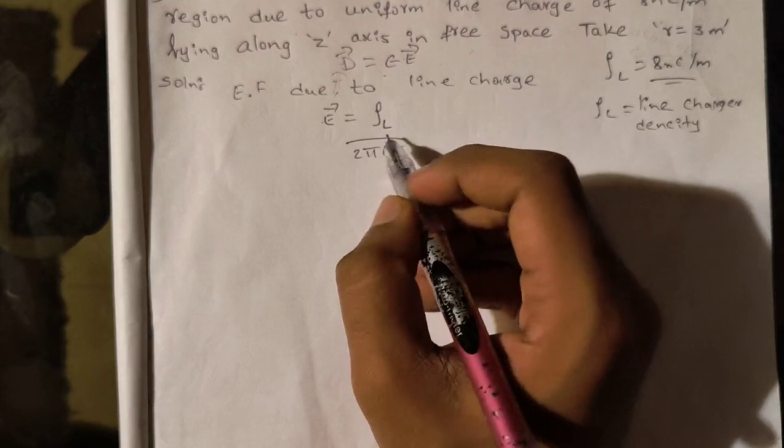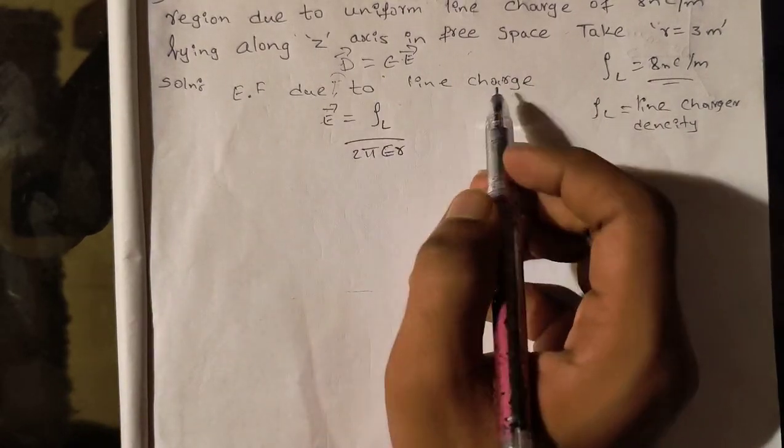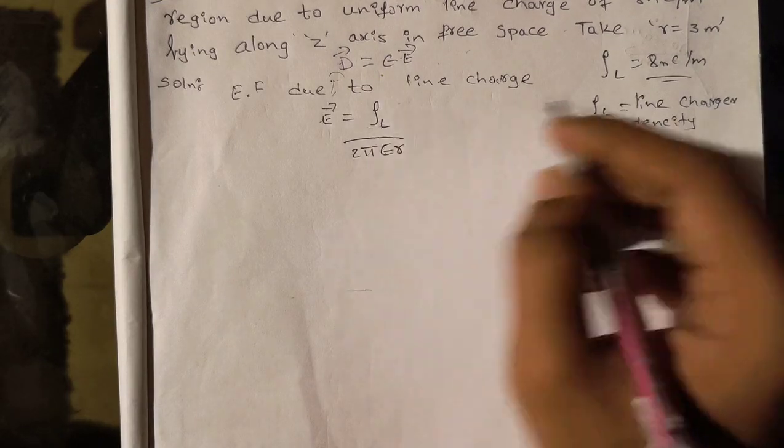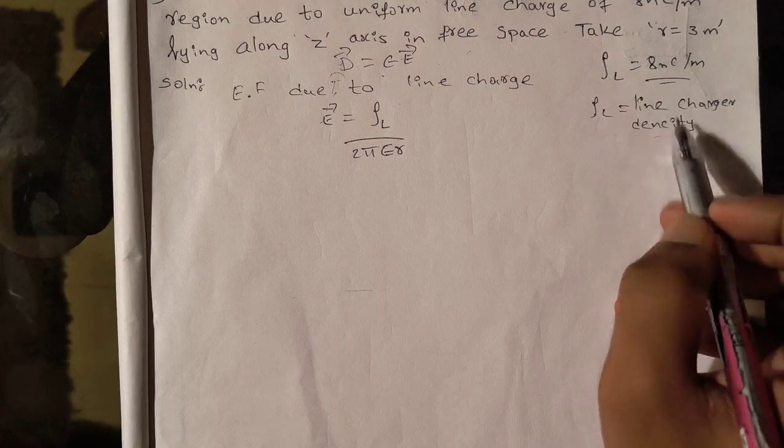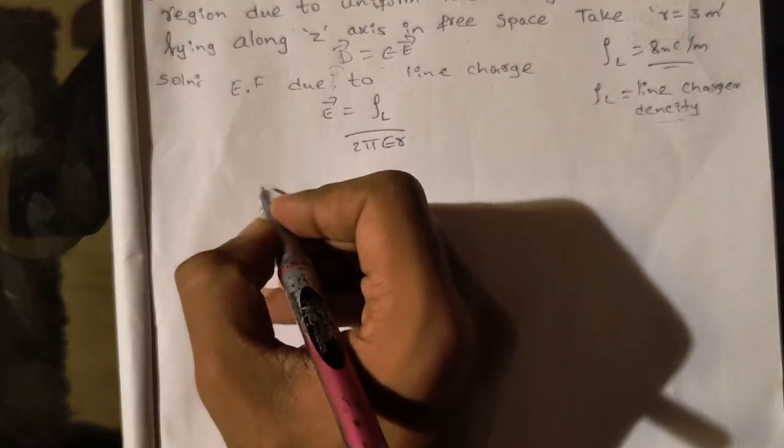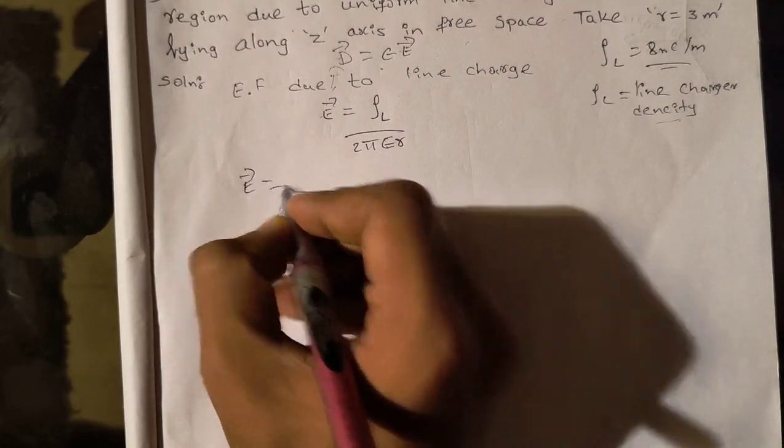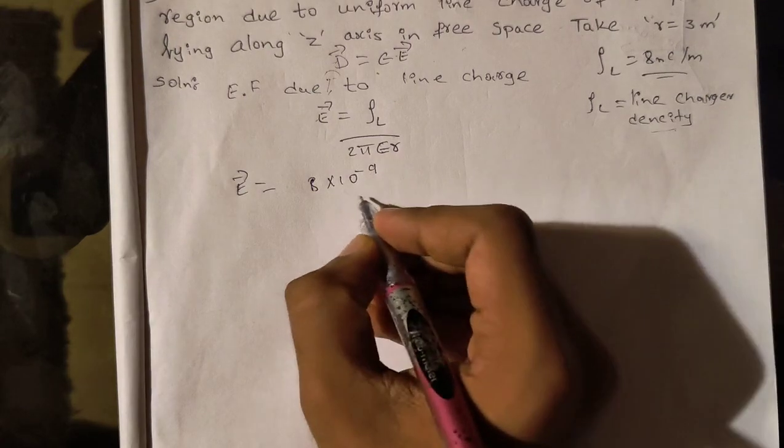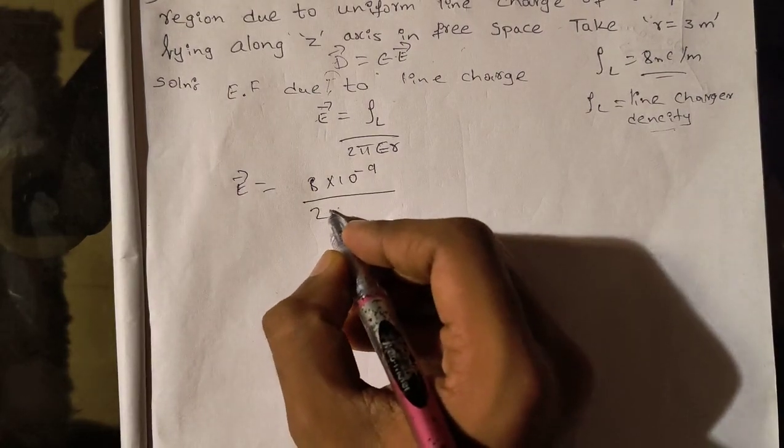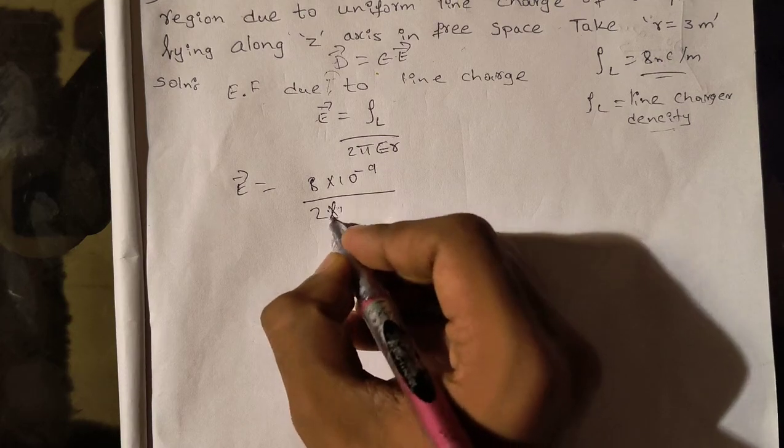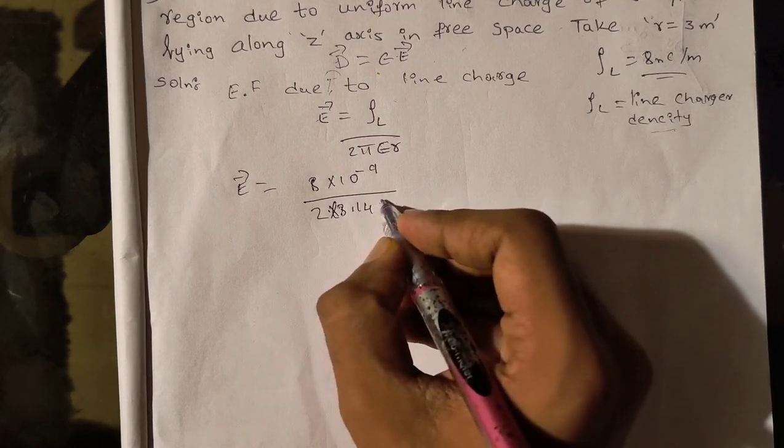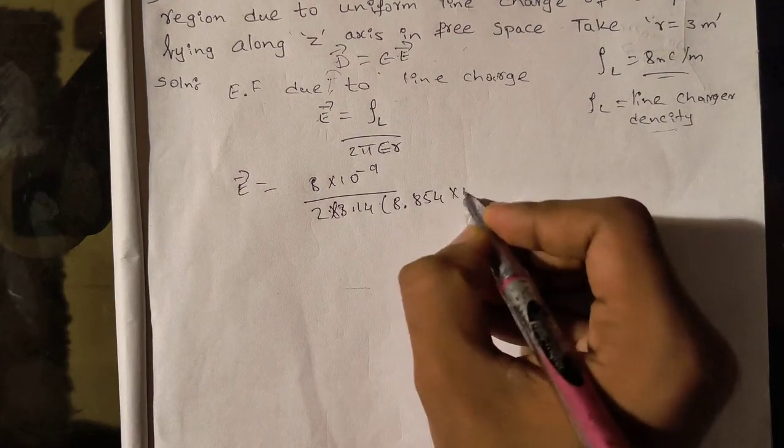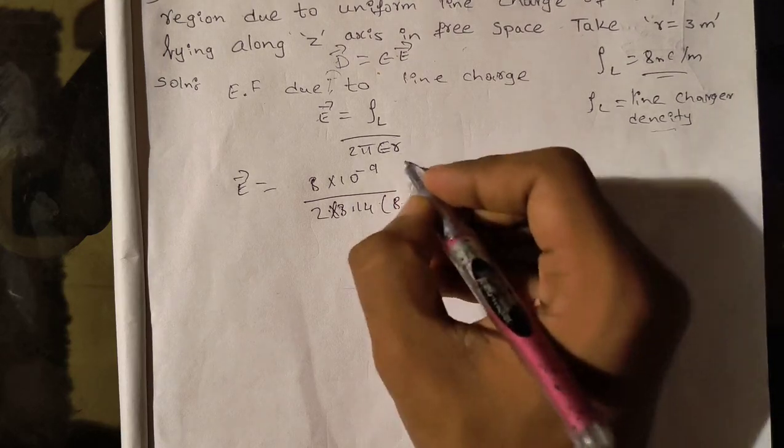Here we need to find flux electric flux density, that is D equals ε₀E. So now first we need to find electric flux due to line charge. Here is the formula, and ρₗ is line charge density. Let's substitute: E equals 8 times 10⁻⁹ divided by 2π times 8.854 times 10⁻¹² times 3.